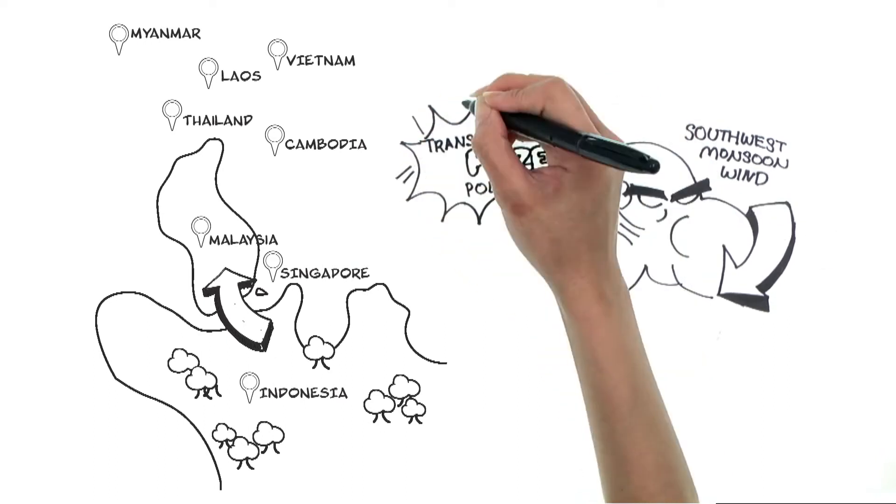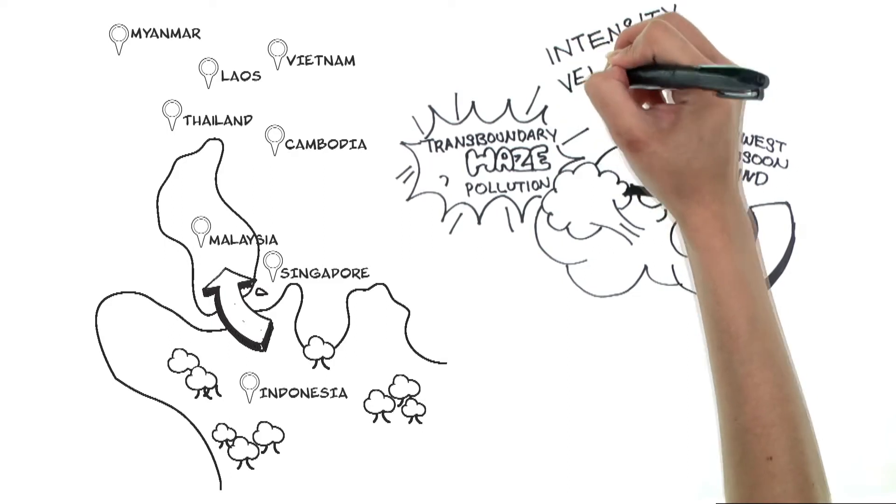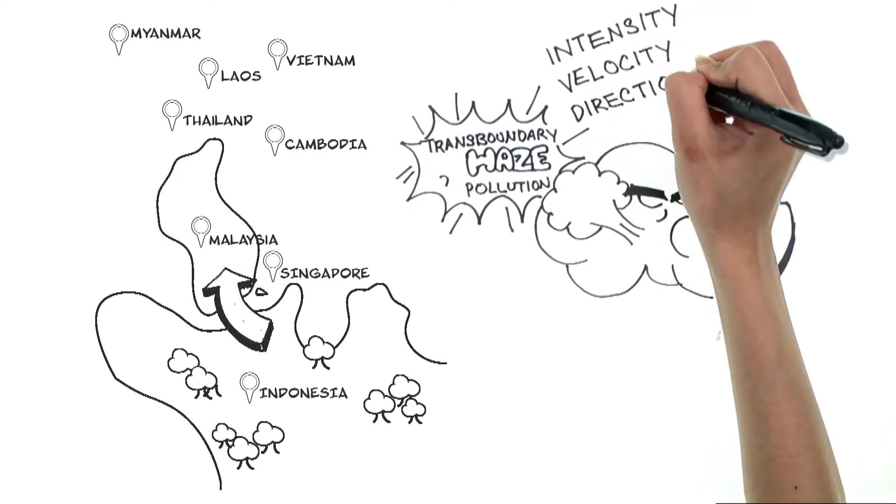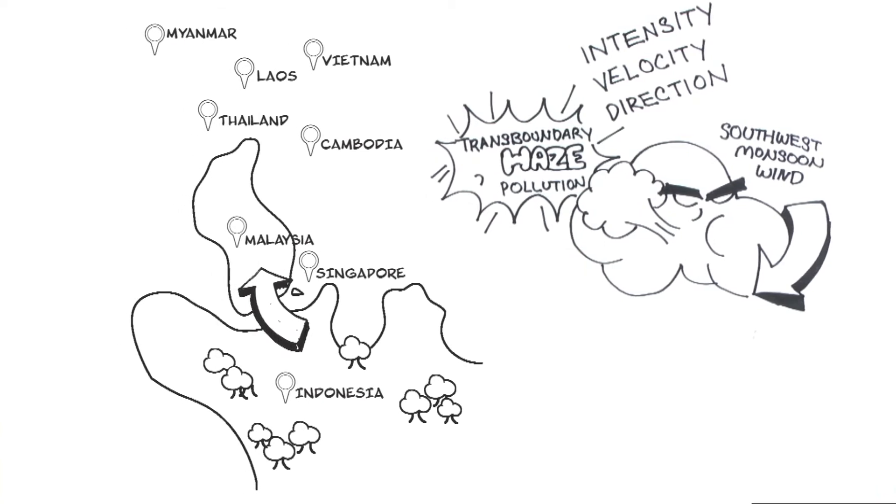This typically occurs between the months of June and September each year. The intensity, velocity and direction of the southwest monsoon wind play a big part in determining how far the haze travels and how thick its fumes are.